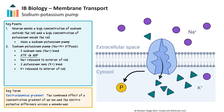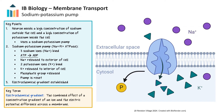The phosphate group also releases, which changes the protein's shape back to its original form, and it's ready to complete the cycle again to pump more ions. The pump allows for the electrochemical gradient to be established and maintained, so the neuron can transmit the action potential.